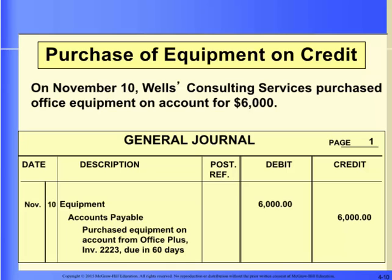Remember when we previously analyzed this transaction — we decided that we would debit equipment for $6,000 and credit accounts payable for the same amount. Here is the journal entry. Remember to include all important information in the explanation, as this improves the audit trail.